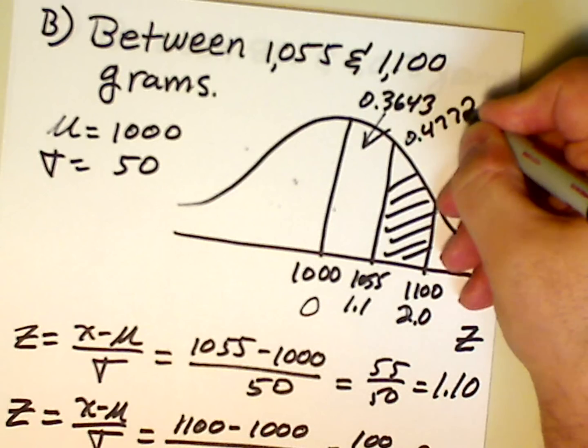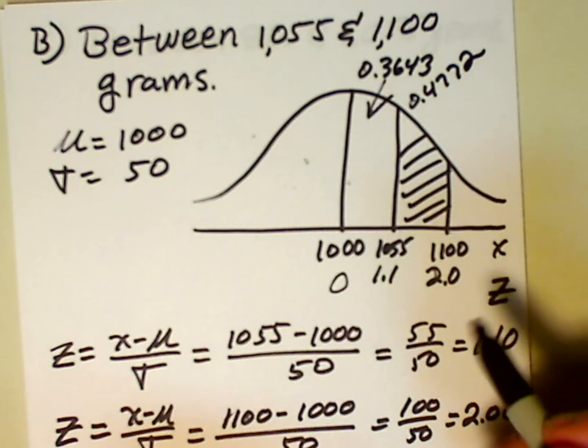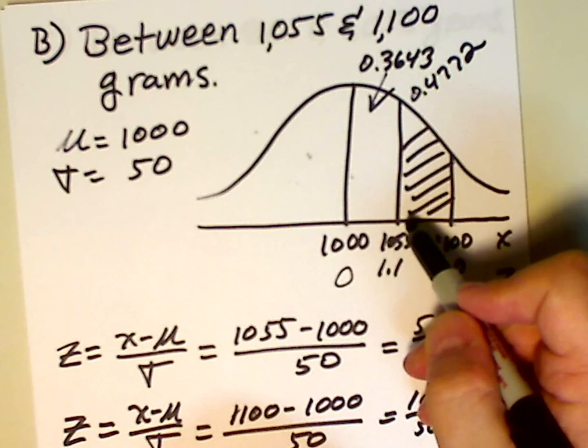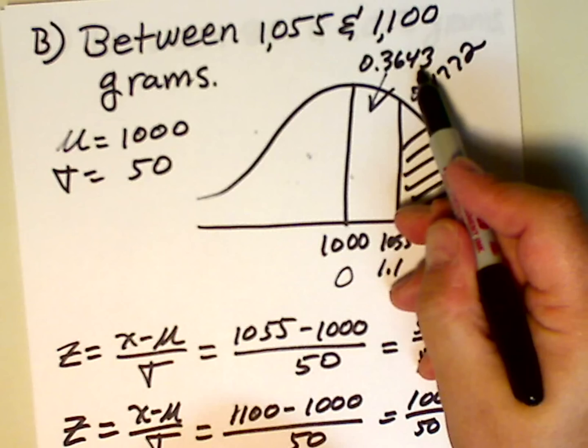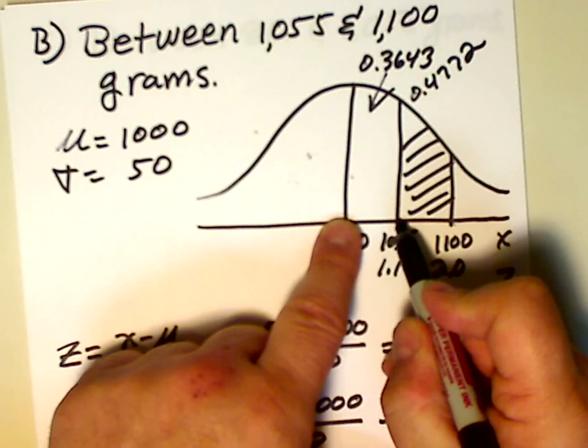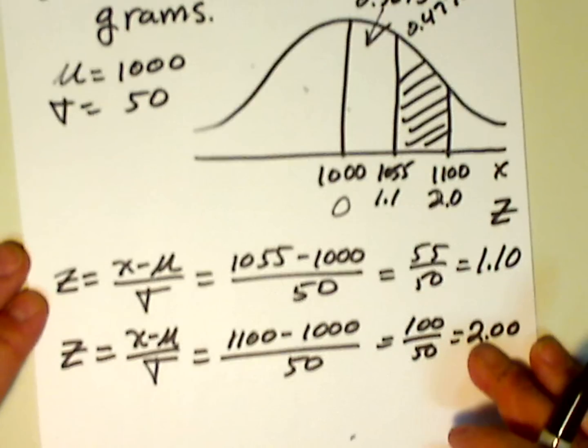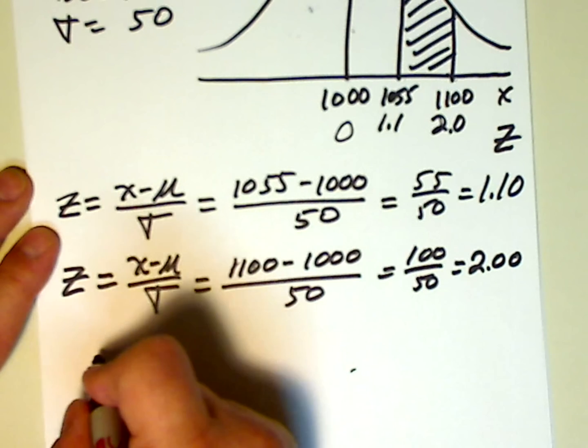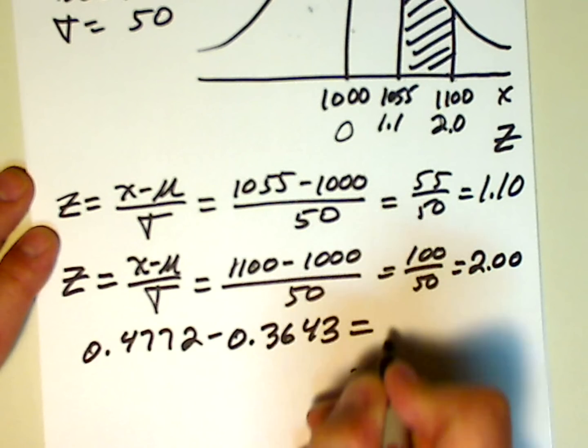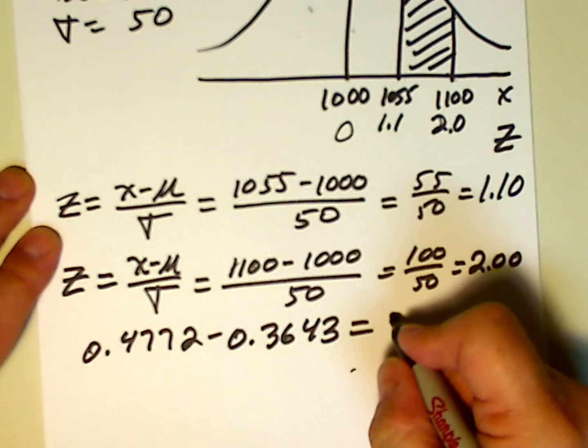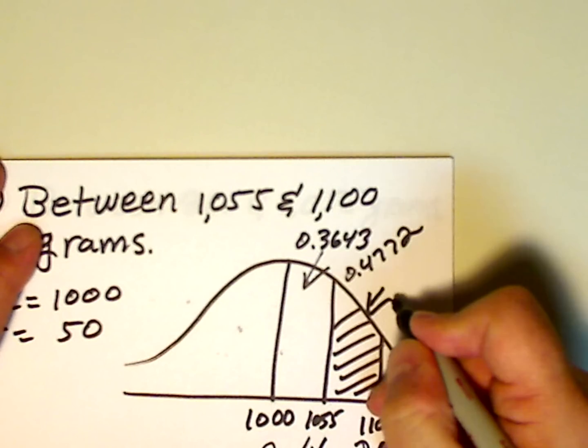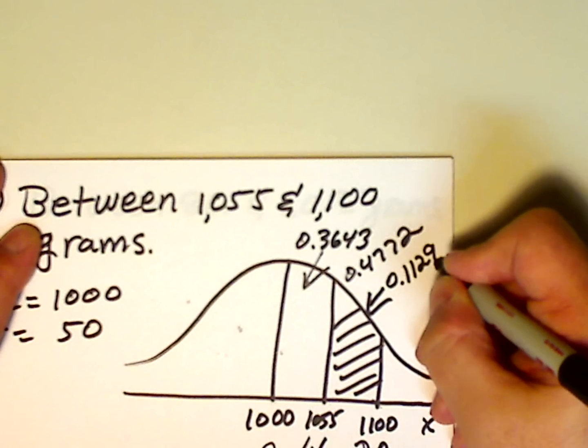So, we have 0.4772. So, we know the area now from 1,000 to 1,100. That's 0.4772. And we know the area from 1,000 to 1,055. That's 0.3643. So, what we're going to do is we're going to take this larger area and we're going to subtract off this smaller area. And that will leave us with the shaded area. So, let's do that. 0.4772 minus 0.3643. And that works out to be 0.1129. So, this area, this shaded region, is 0.1129.